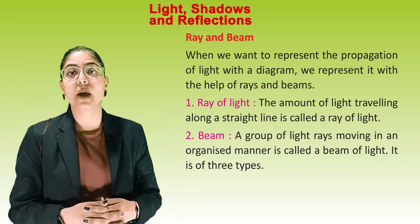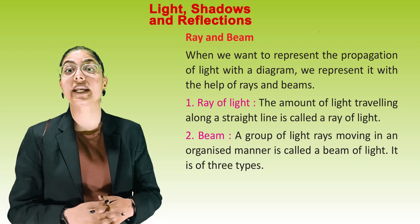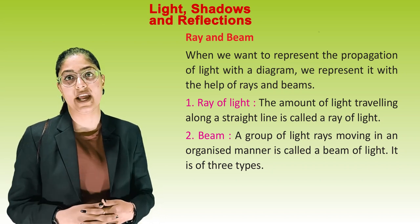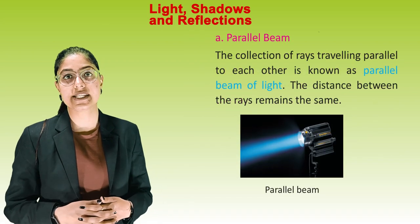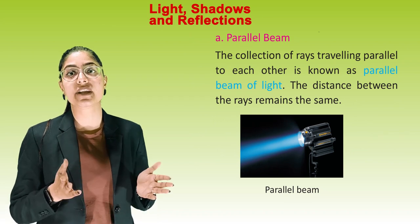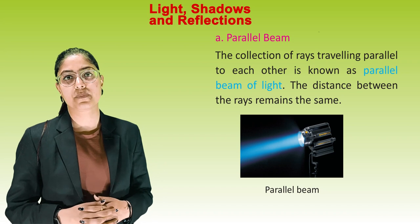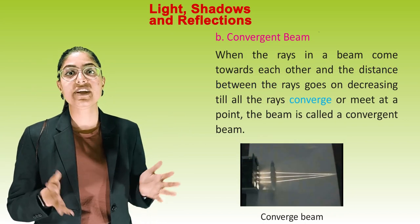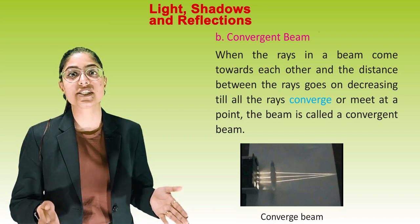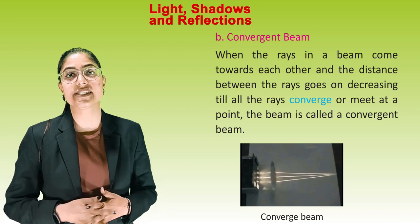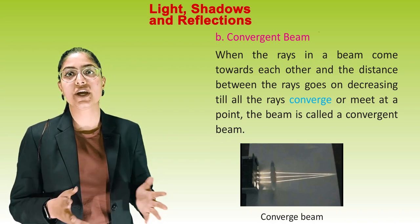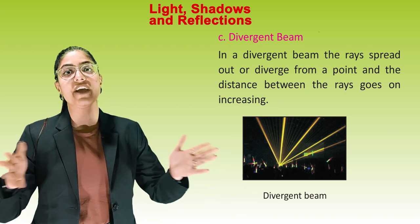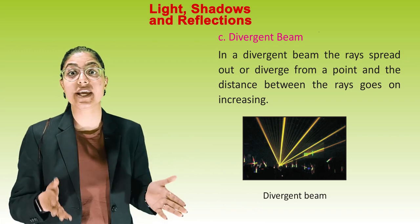Rays of light. The path of light travelling along a straight line is called a ray of light. Beam. A group of rays moving in an organised manner is called a beam of light. It is of three types. First is parallel beam: the collection of rays travelling parallel to each other, where the distance between the rays remains the same. Second is convergent beam: when rays in a beam come towards each other and the distance decreases until all the rays converge or meet at a point. Third is divergent beam: the rays spread out or diverge from a point and the distance between the rays goes on increasing.